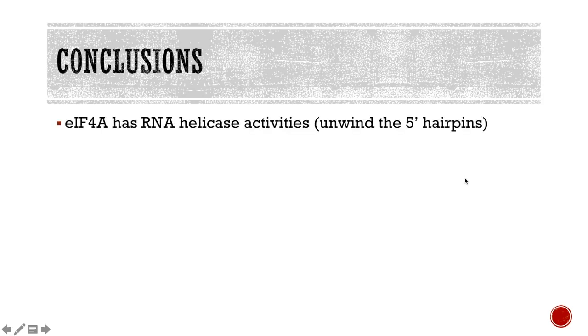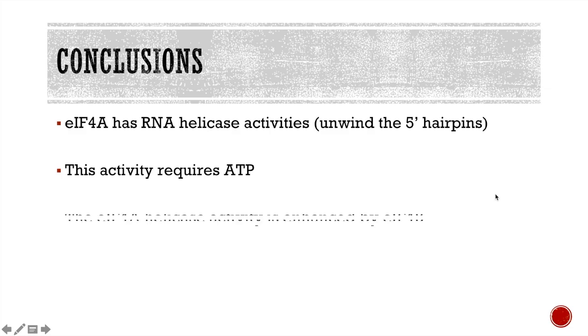What are the overall conclusions we can derive from these experiments? Firstly, EIF4A has RNA helicase activities. It can therefore unwind the hairpins that are frequently found in the 5' UTR of eukaryotic mRNAs. Secondly, this activity requires ATP. Lastly, the EIF4A helicase activity is enhanced by EIF4B.